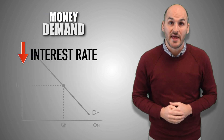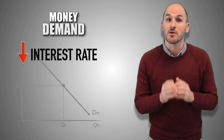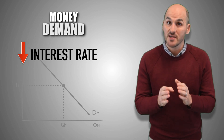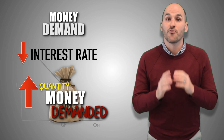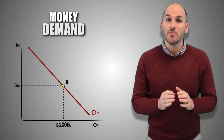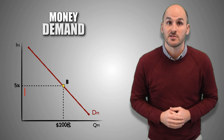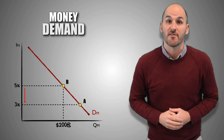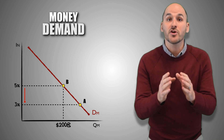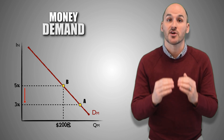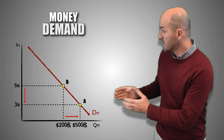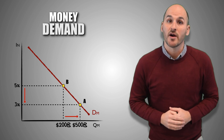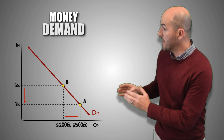If nominal interest rates are low, consumers and borrowers will pay less to banks and other lenders to borrow their money and will use more, causing the quantity of money demanded to increase. For example, at a nominal interest rate of 5%, consumers demand 200 billion dollars. If nominal interest rates fall to 3%, consumers are more willing or more able to demand money because it is less expensive, resulting in an increase to 500 billion dollars — a movement along the money demand curve from point B to point A.